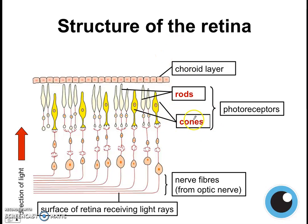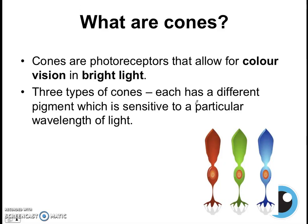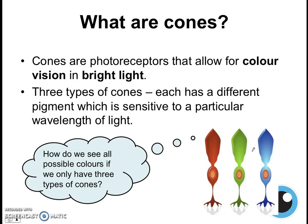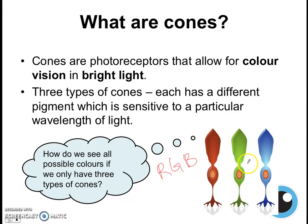Now let's take a closer look at our rods and our cones and see what they do. Cones are photoreceptors that allow for color vision, and they work best in bright light. We have three types of cones, which are sensitive to different wavelengths of light and hence different pigments — red, green, and blue cones — and this allows us to see the different kinds of colors. Depending on how strongly each kind of cone is stimulated, we can get different combinations of stimulation, which allows us to perceive different kinds of colors — similar to how RGB works on your TV.